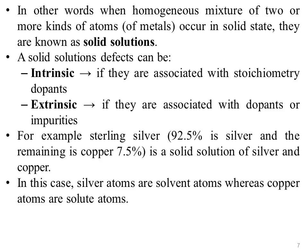The more abundant atomic form is referred to as solvent and the less abundant atomic form is referred to as solute. A solid solution defect can be intrinsic if associated with stoichiometric dopant, or extrinsic if associated with a dopant or impurities. When the dopant concentration rises above 0.1 to 1%, it is common practice to refer to the material as a solid solution.